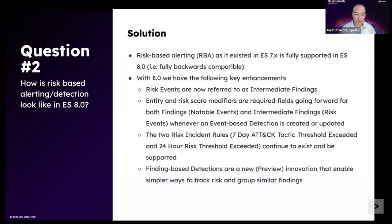There are new risk-oriented detection types included within a new construct called finding-based detections, which is a preview feature in the EDO release. Once it becomes GA, it will likely remain as preview for several months until the next feature release, which will be early to mid next year. Those finding-based detections provide a new and easier way to track, aggregate, and manage risk using risk thresholds that require no knowledge of SPL, and a simple and easy way to group intermediate findings as well as findings.